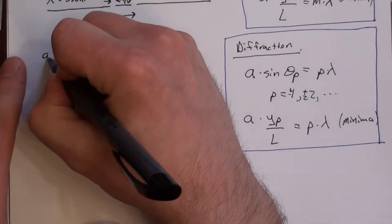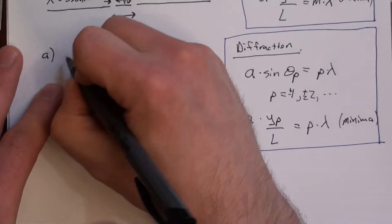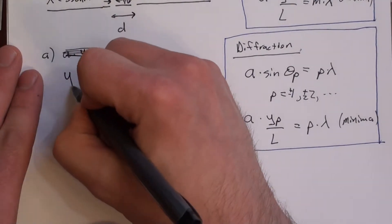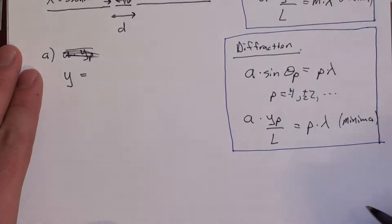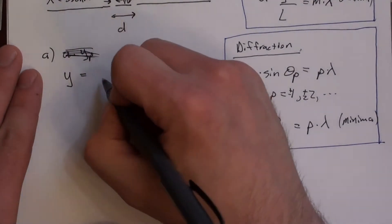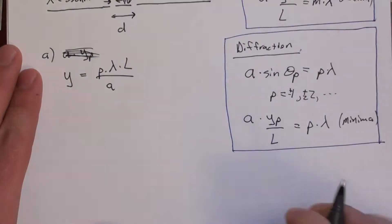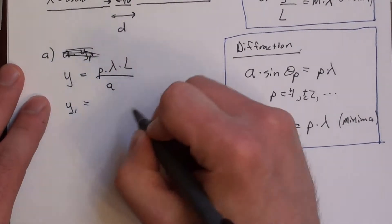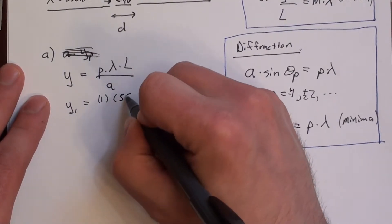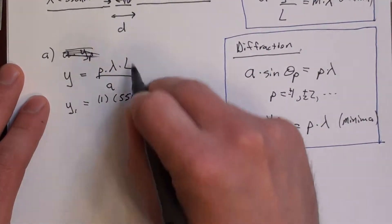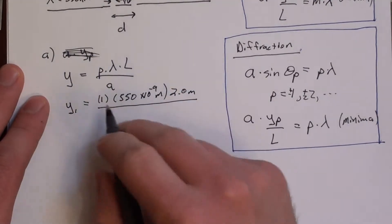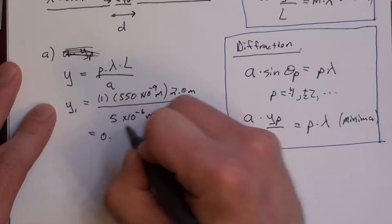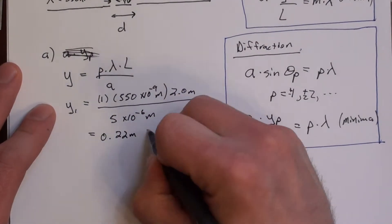So we can simply use this equation and say, since we're looking for the first one, P is going to equal 1. Let me solve this for Y, since that's what we're solving for. I'll say Y equals P lambda L over A. We're looking for Y1, so Y1 is 1 times lambda, which is 550 nanometers, times 10 to the minus 9 meters. L is 2 meters. And A is 5 micrometers, so it's 5 times 10 to the minus 6 meters. And if you do that math, what you end up with is 0.22 meters, or 22 centimeters.